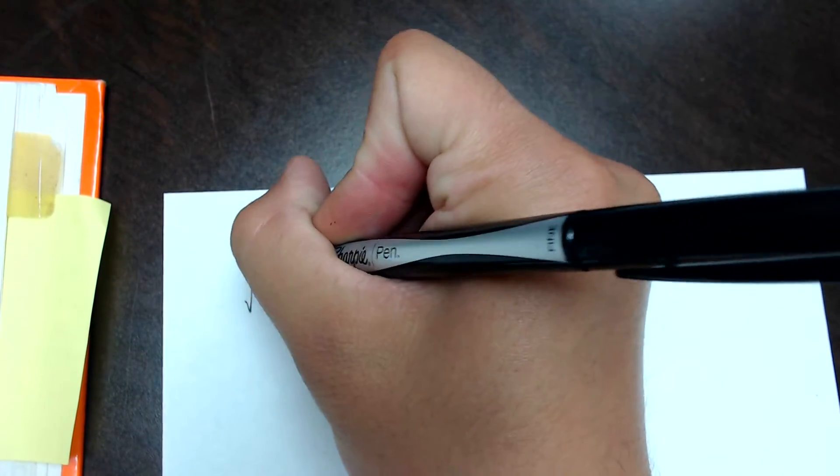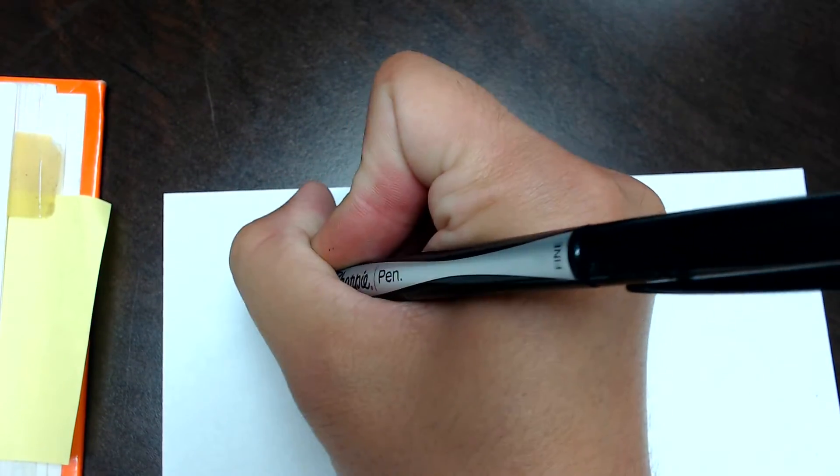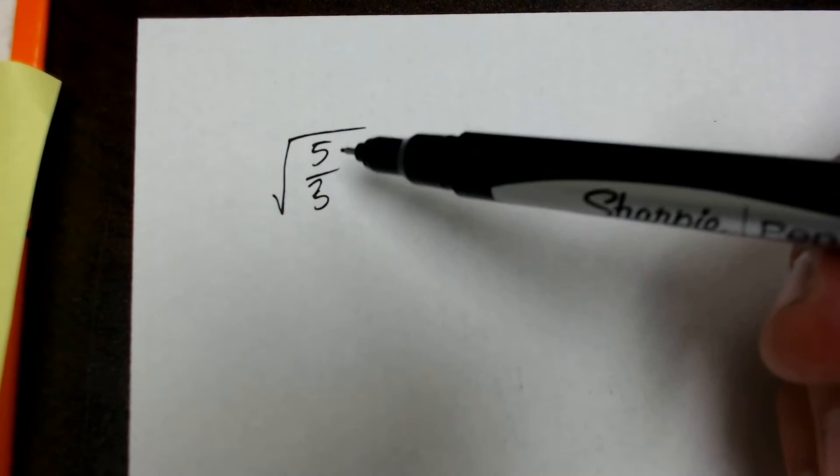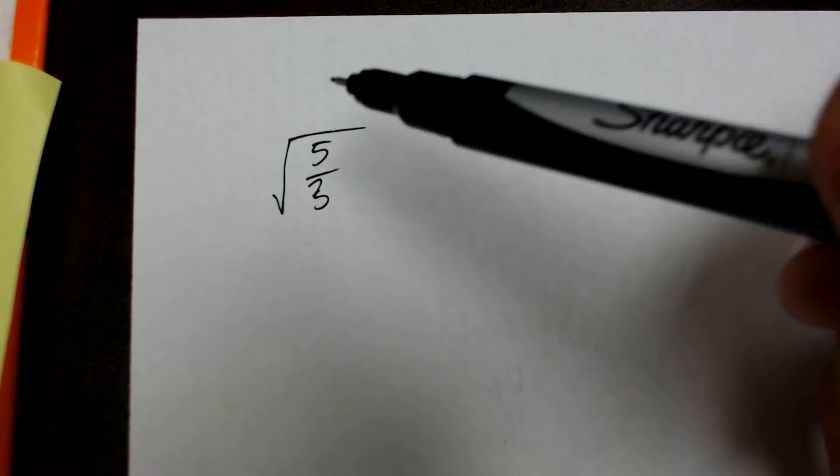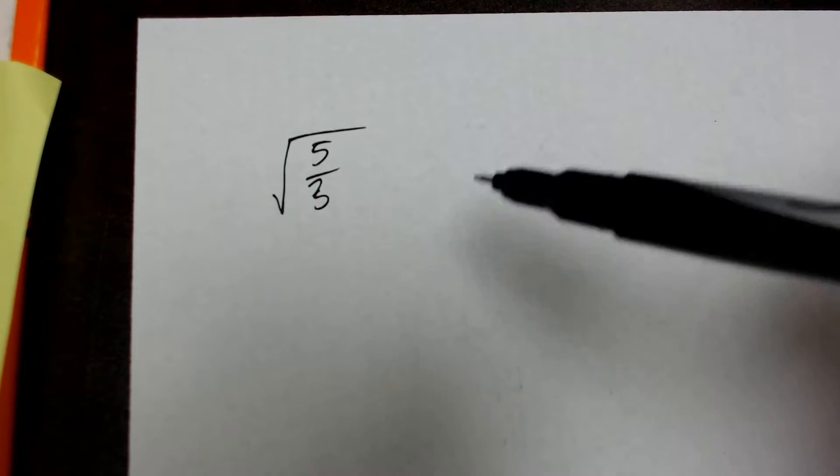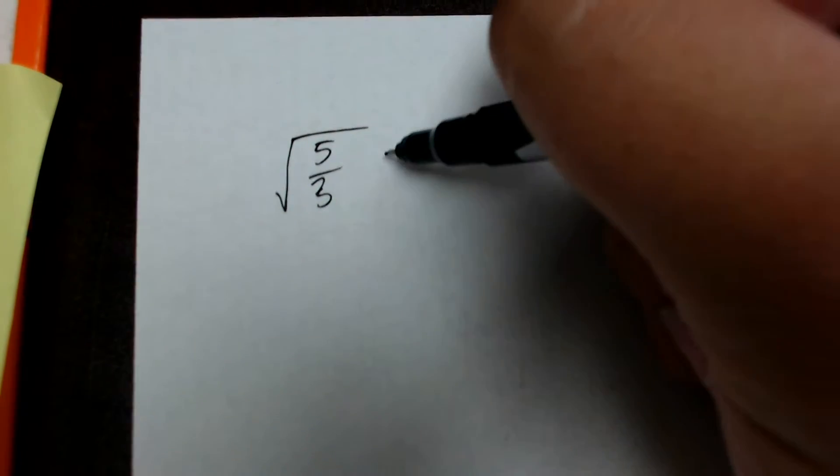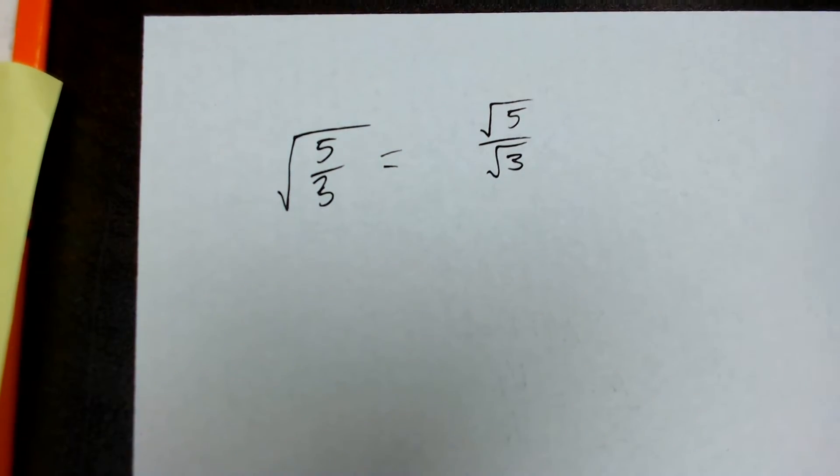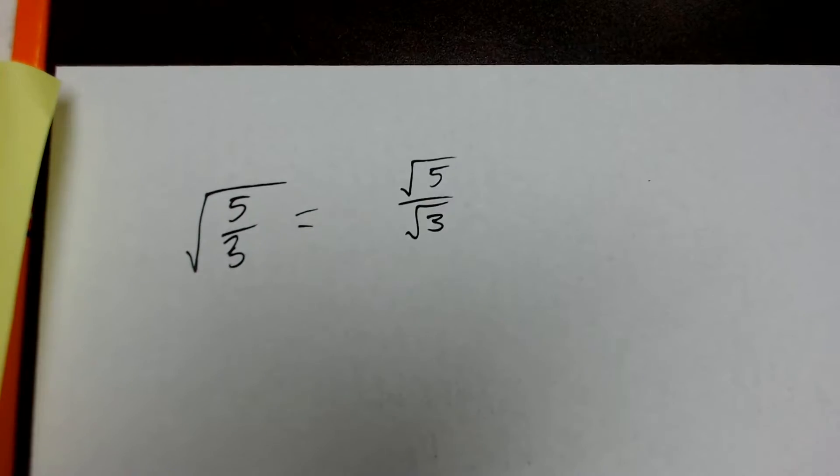So let's say we have to simplify the following radical expression. The square root of 5 thirds. Okay, so we have to simplify this. And the way we'd simplify this is using the quotient rule. All it says is that if you have a fractional radical or a division in a radical, you can rewrite it as two separate radicals being divided by each other. So, we could rewrite this as the square root of 5 divided by the square root of 3, and it's the same number.